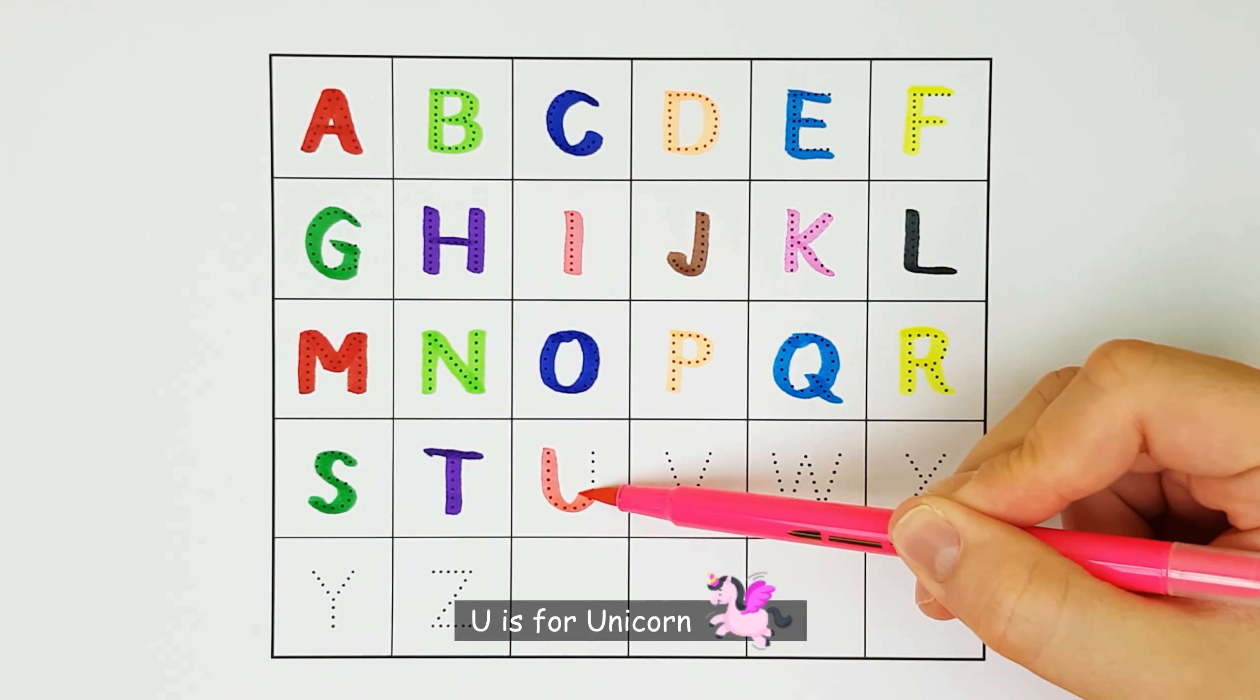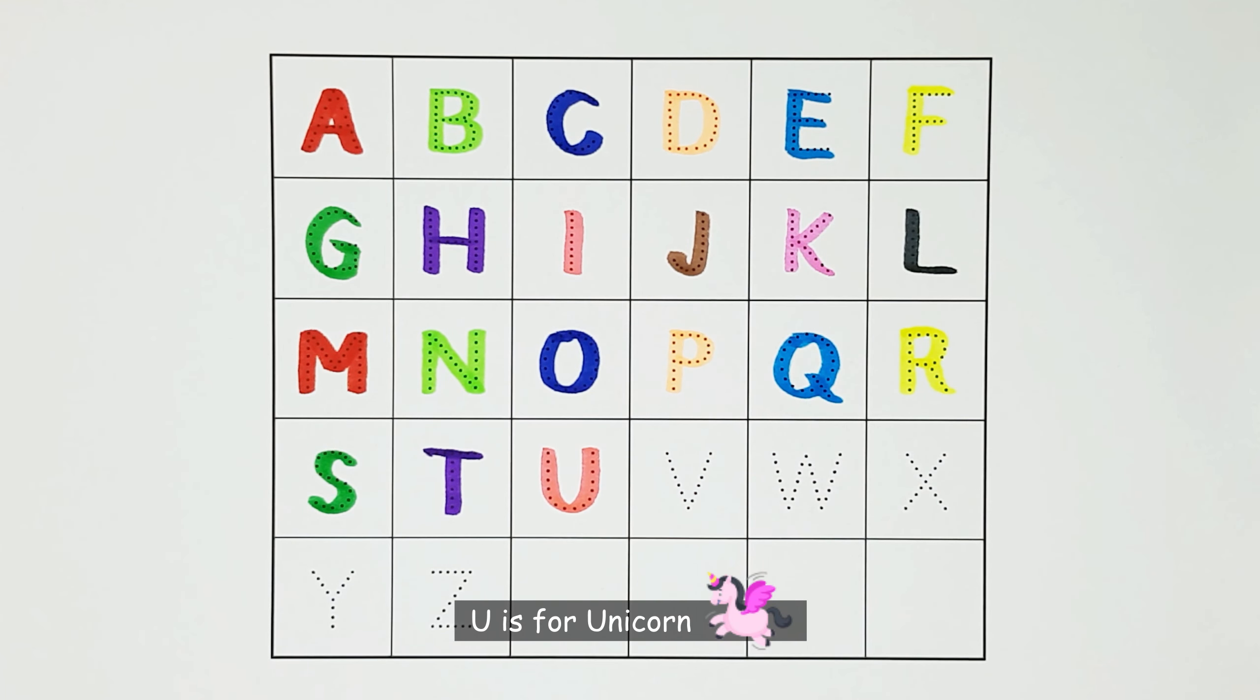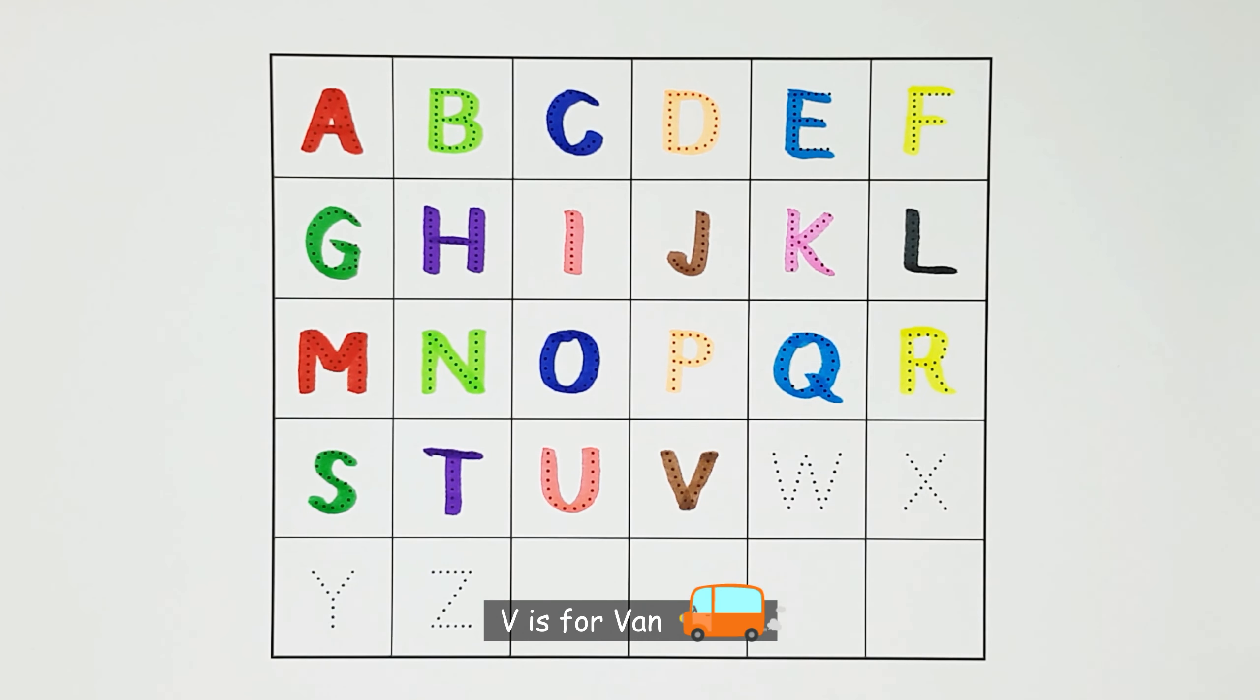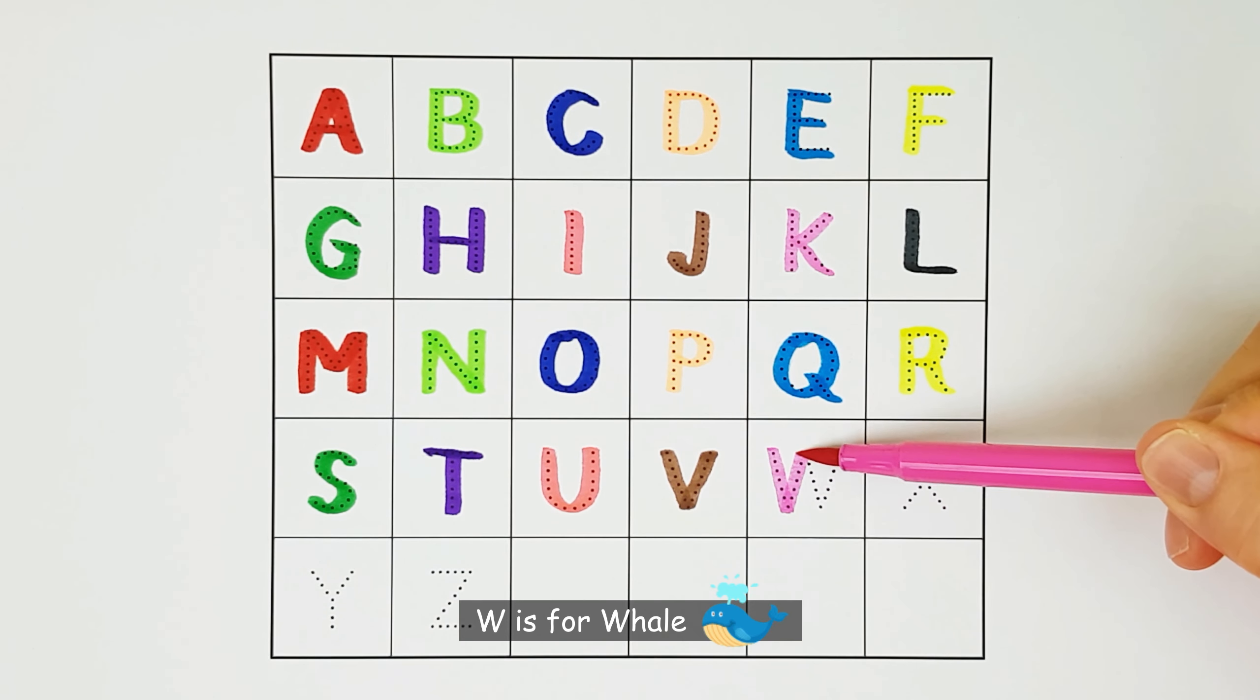U. U is for unicorn. U. V. V is for van. V. W. W is for whale. W.